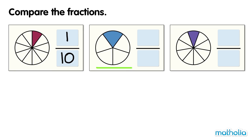This circle has five equal parts. One part is shaded. One fifth of the circle is shaded. This circle has nine equal parts, and one part is shaded. One ninth of the circle is shaded.